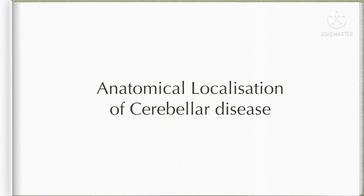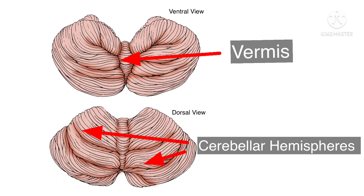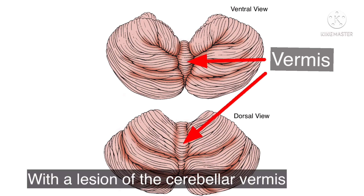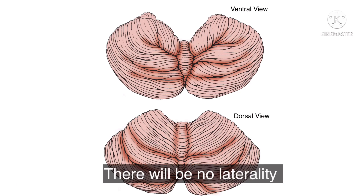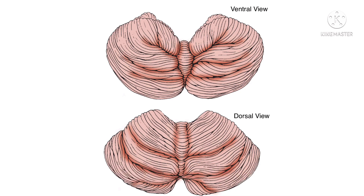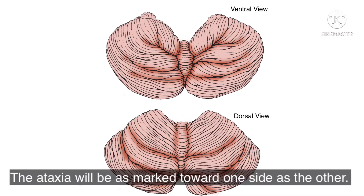Cerebellar disease can be anatomically localized to different areas of the Cerebellum based upon the difference in the gait that is being observed. The Cerebellum basically comprises of the Vermis and the two Cerebellar Hemispheres. If the lesion is localized to the Cerebellar Vermis, the patient will exhibit a lurching or staggering gait. There will be no laterality and the Ataxia will be equally marked on both sides.